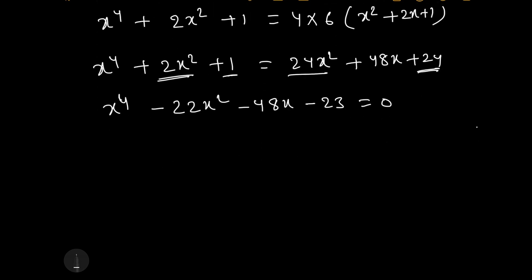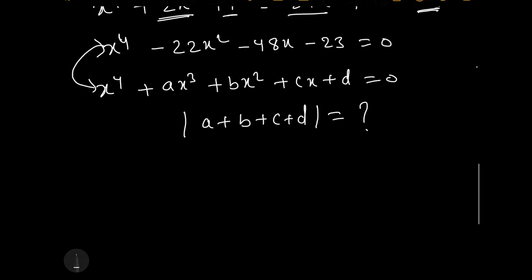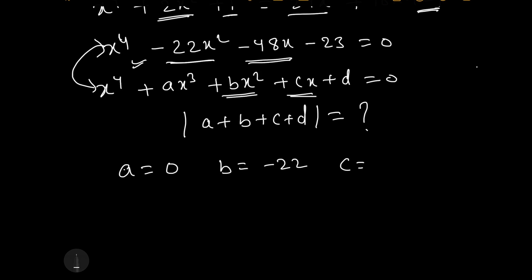Now let us compare this with the original equation x to the power 4 plus ax cubed plus bx squared plus cx plus d equals 0. After comparison: the value of a is 0 (since there is no x cubed term), the value of b is minus 22 (comparing bx squared with minus 22x squared), the value of c is minus 48 (comparing cx with minus 48x), and the value of d is minus 23.